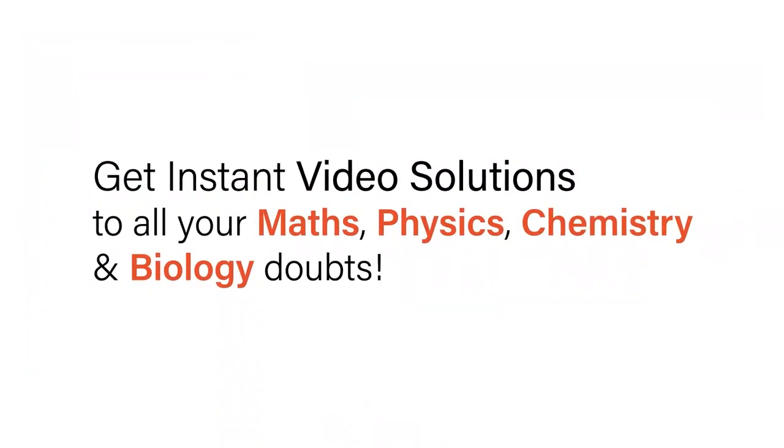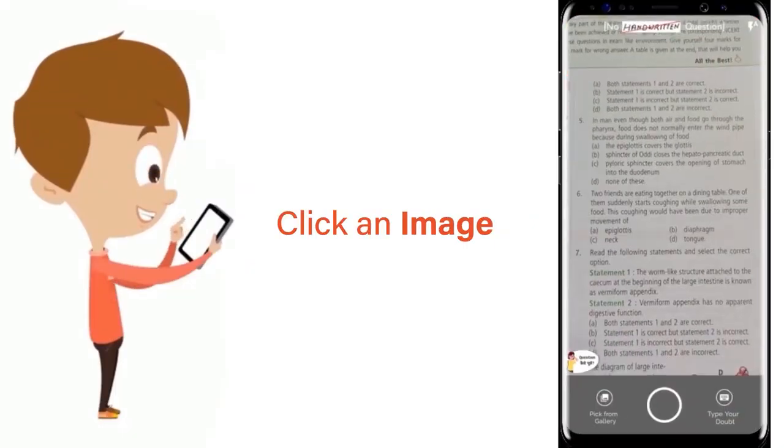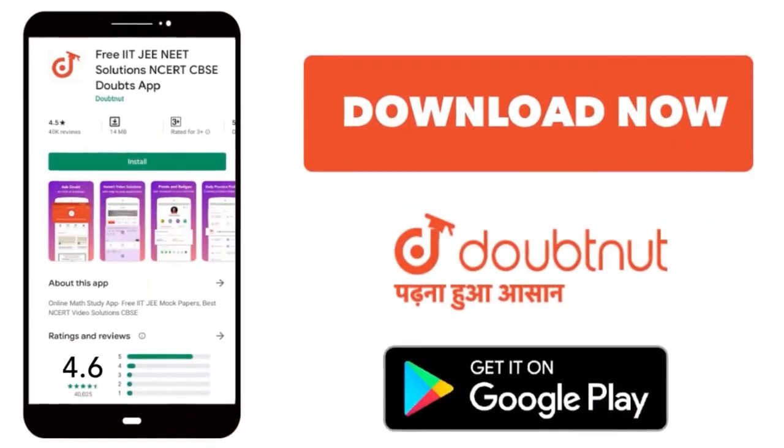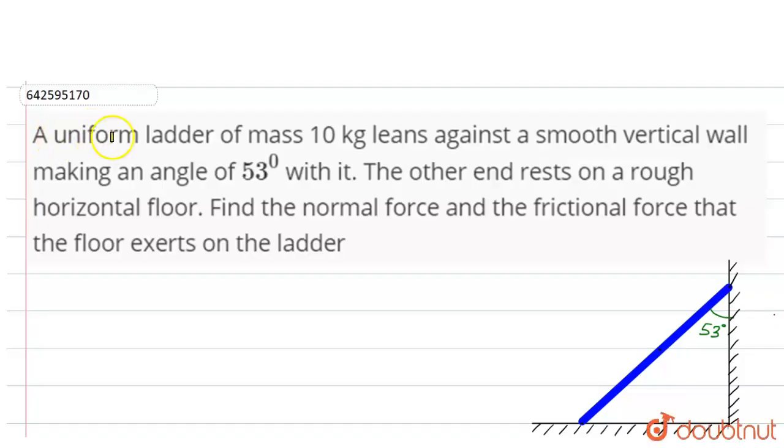With Doubtnet, get instant video solutions to all your math, physics, chemistry, and biology doubts. Just click the image of the question, crop it, and get instant video solution. The question is: a uniform ladder of mass 10 kg leans against a smooth vertical wall.